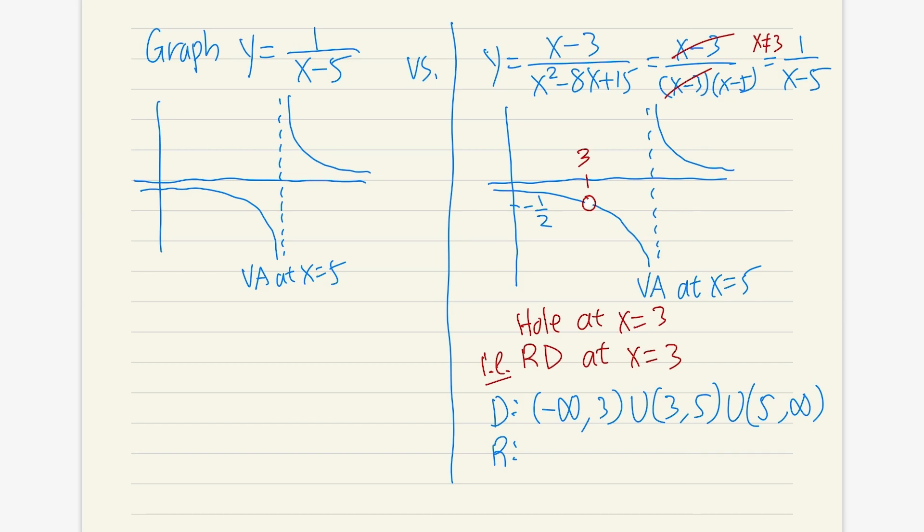As of the range, where we look at this for the y value, y cannot be negative 1 half. And also because we have this horizontal asymptote, y cannot be 0. We write from negative infinity to negative 1 half. And then union negative 1 half to 0. And then union 0 to infinity. So this is how you find the domain and the range for this particular function.